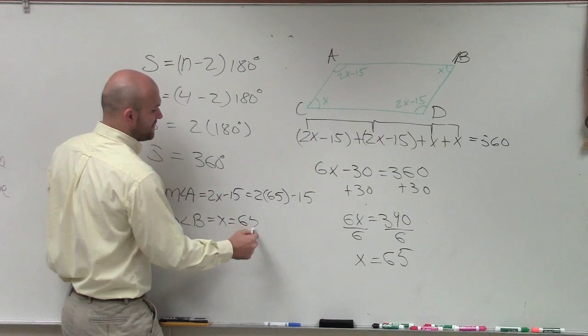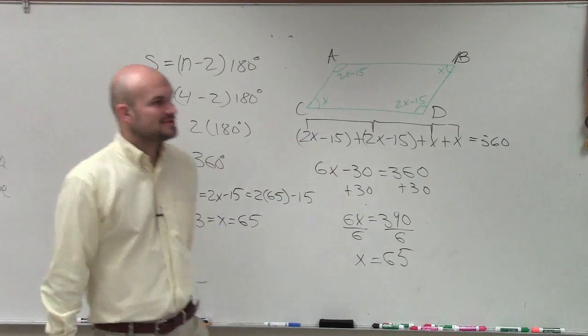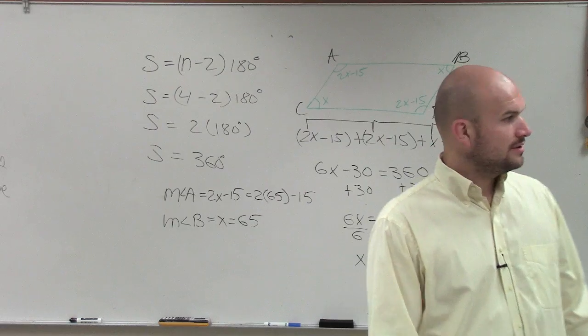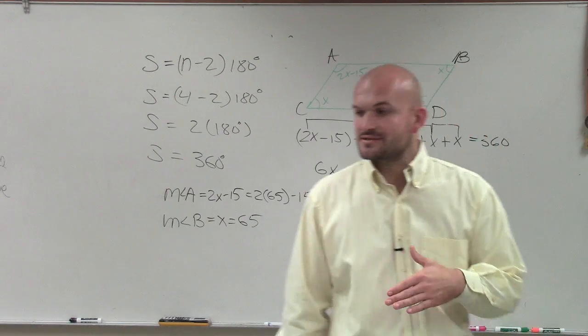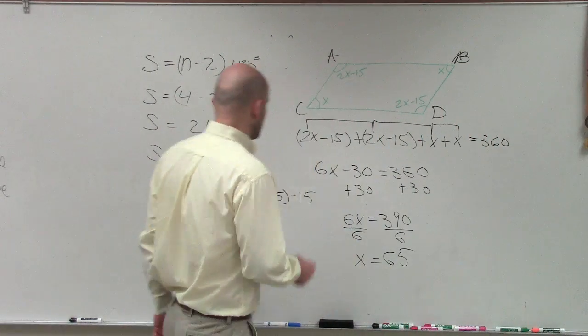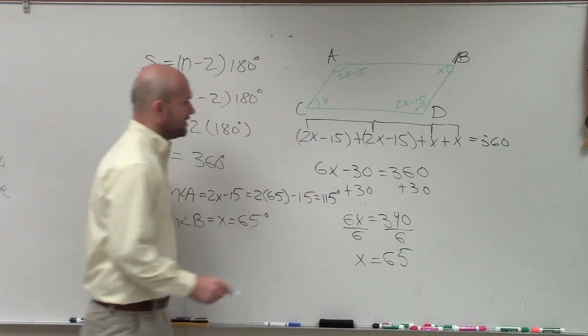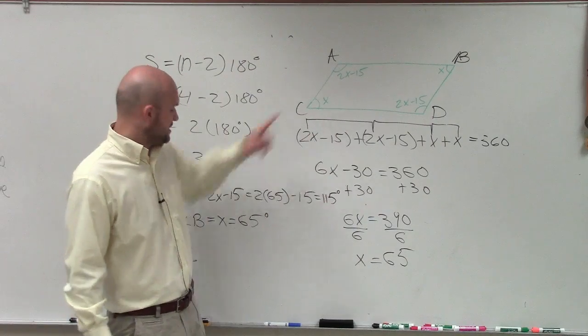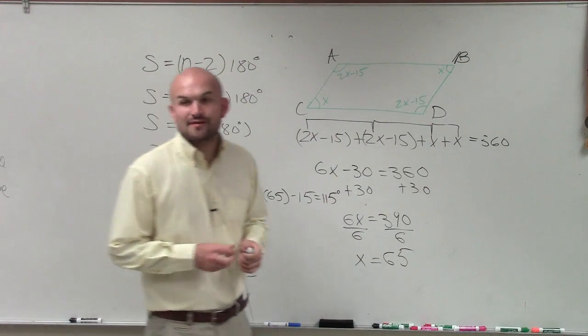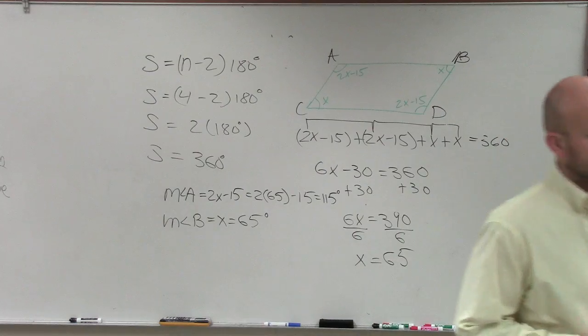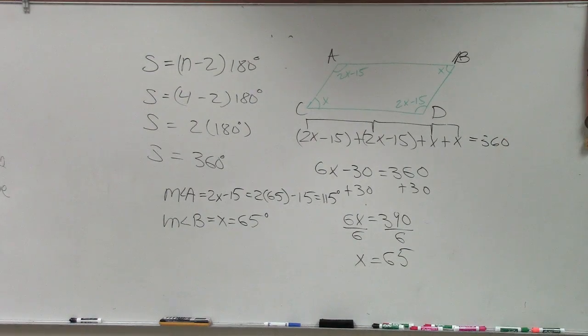So then we do 2 times 65, which is 130. 130 minus 15 would be 115. So therefore, the measure of angle A is 115 degrees, and the measure of angle B is just 65 degrees. Very, very good.